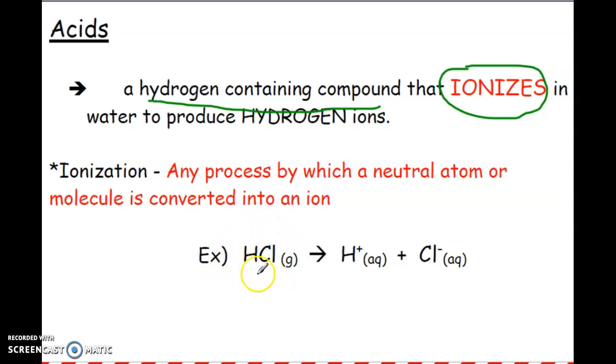Looking at this example here, HCl gaseous, this is actually called hydrogen chloride. Hydrogen chloride then becomes hydrochloric acid once it is dissolved. But what we haven't been showing up till now is that HCl, once it's aqueous, is really separated into their ions. So HCl aqueous is really hydrogen ions and chlorine ions. This process is called ionization. It's any process by which you make a neutral atom or molecule into an ion.